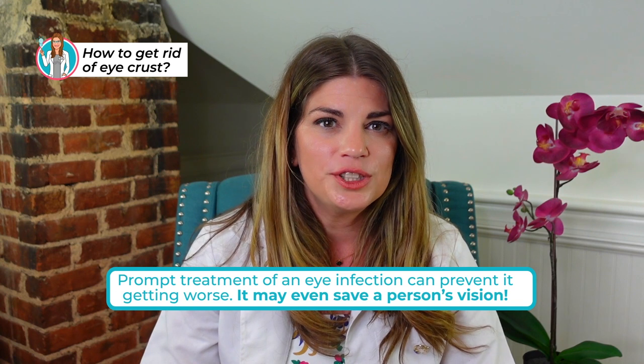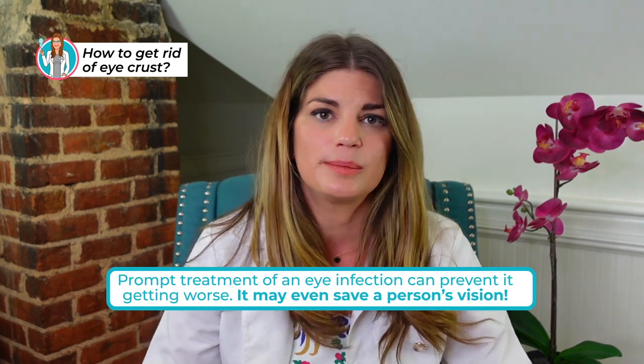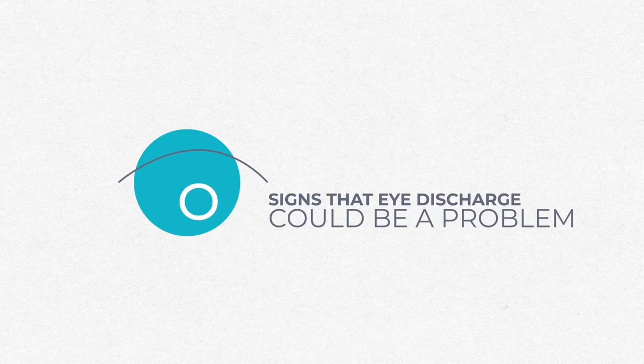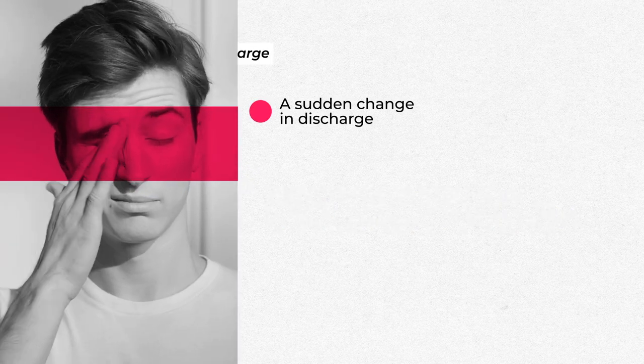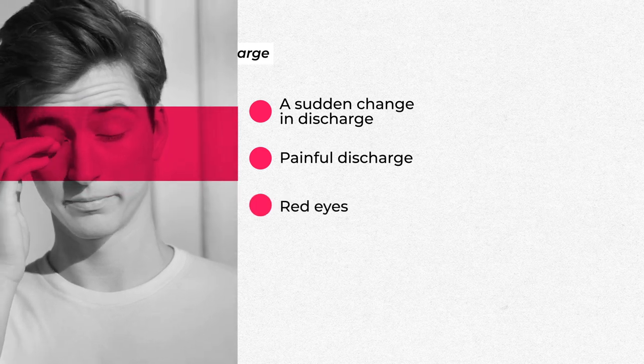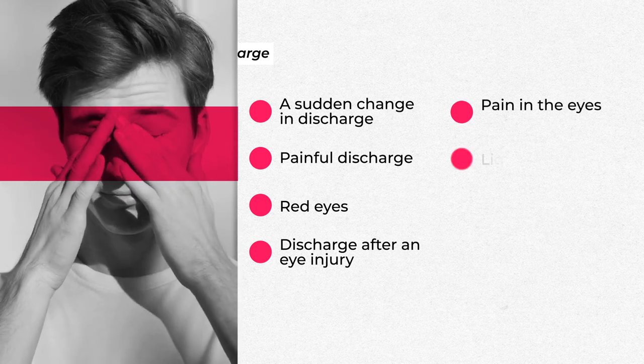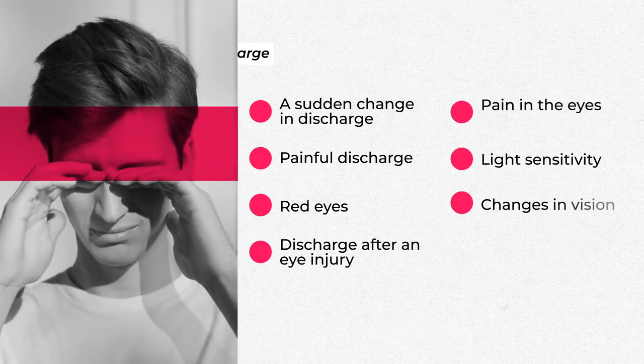Ultimately, eye boogers are normal and not a sign that something's wrong. But some eye infections can also cause similar symptoms, so it's important to know the difference between normal and harmful eye discharge. Prompt treatment of an eye infection can be the difference between it getting worse and causing long-term visual issues versus just getting better. Some signs that your eye discharge could be a problem include a sudden change, pain, red eyes, discharge after an eye injury, light sensitivity, or changes in your vision.